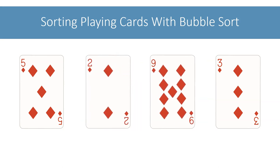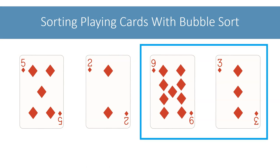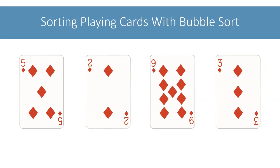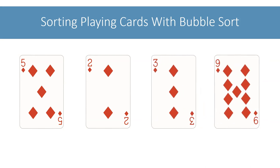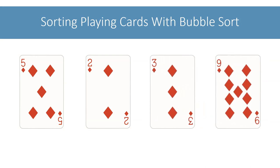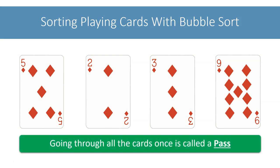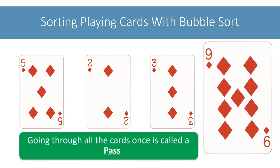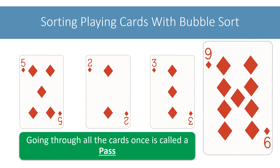After that, we will compare 9 with 3. Again, the cards are in wrong order, so let's swap them. We have gone through all the cards once — we call this a pass. We have completed the first pass of sorting the cards. Notice that at the end of this first pass, the last card is in its correct position. The largest of these 4 cards is 9, and it is correctly placed at the last position.